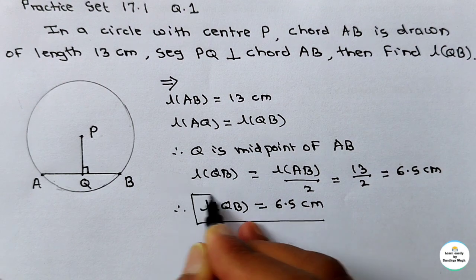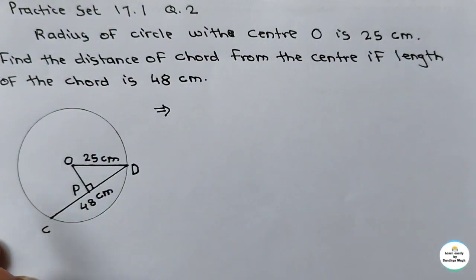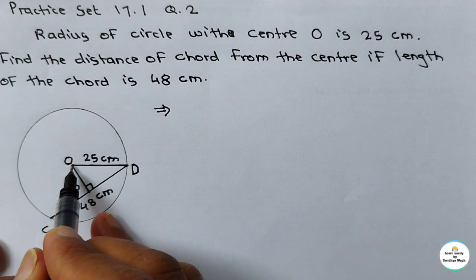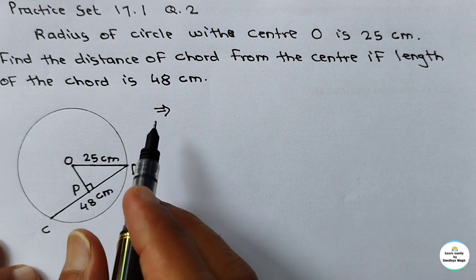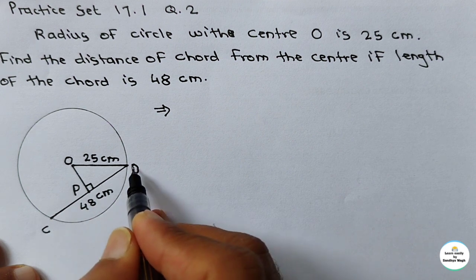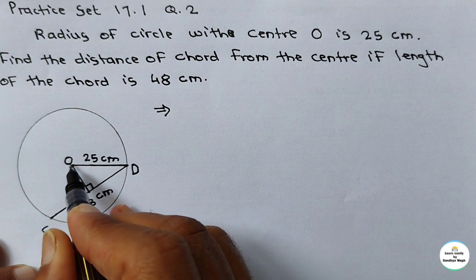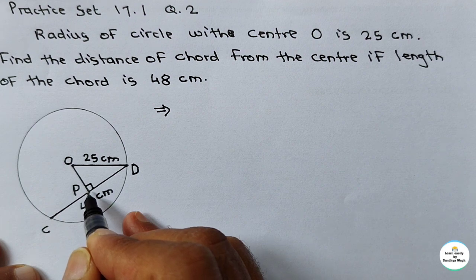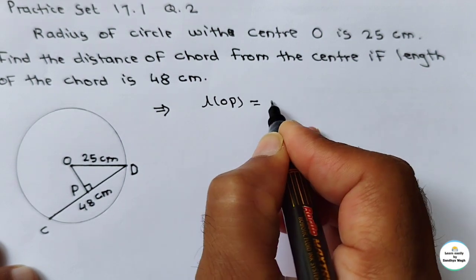Now see question number 2 for practice set 17.1, class 8 mathematics. The question is: radius of circle with center O is 25 cm, meaning radius OD is 25 cm. Find the distance of the chord from the center if the length of chord is 48 cm. We have to find the distance OP. Let it be X.